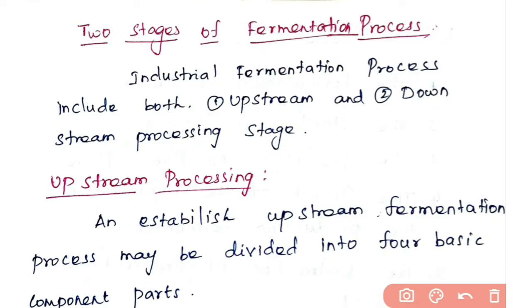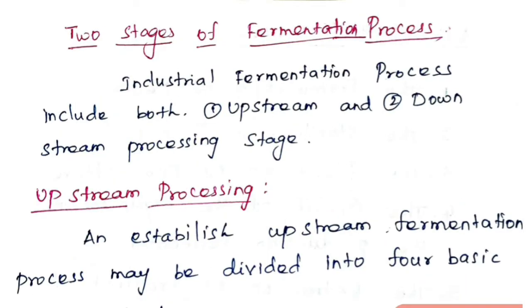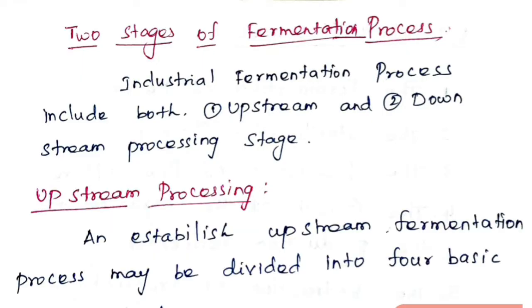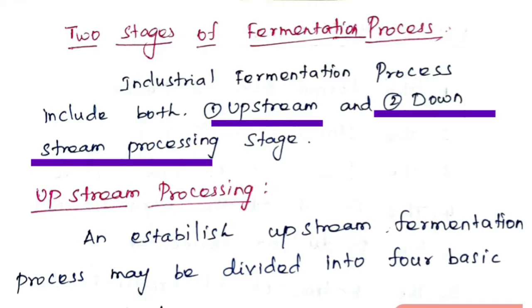Hello everyone, welcome to Biotech Notebook. In this video we are going to see an overall view about the fermentation process. Industrial fermentation processes are increasingly popular for the production of bulk fine chemicals, pharmaceuticals, biofuel, and biopolymers. This process includes two stages: upstream processing and downstream processing.